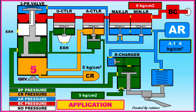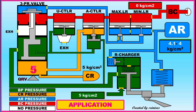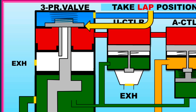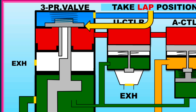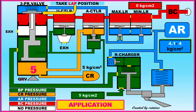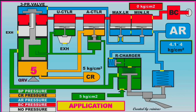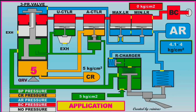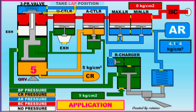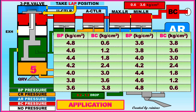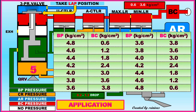Lap position is the position of the hollow stem of the 3-pressure valve in which BC is connected neither to AR nor to exhaust. During brake application or release, the hollow stem is designed to take the lap position up to full service application, for the purpose of facilitating graduated brake application or release. These graduated application and release pressure variations should be checked on the DV test bench.